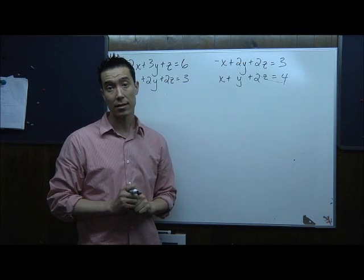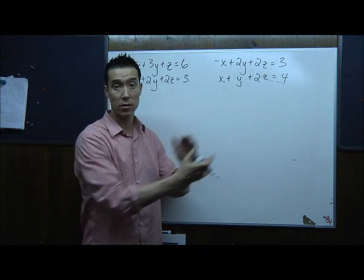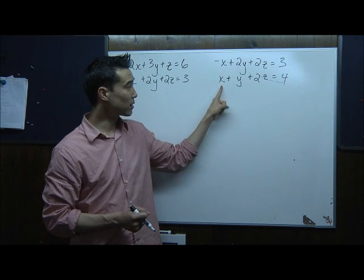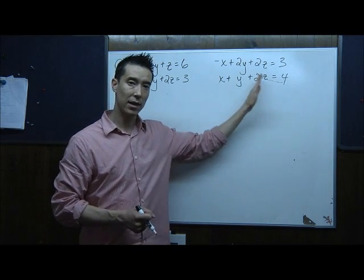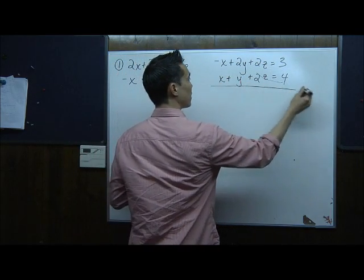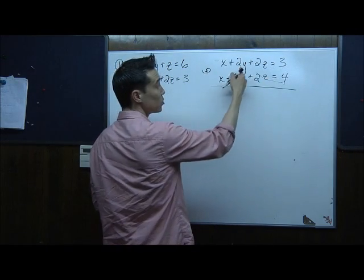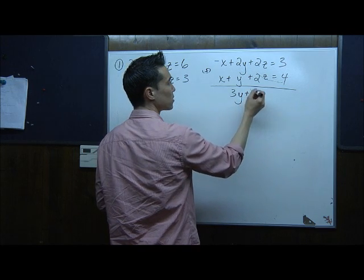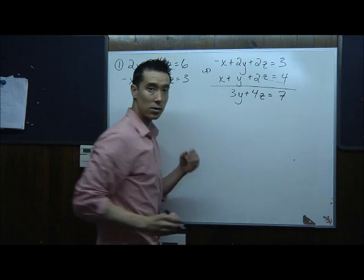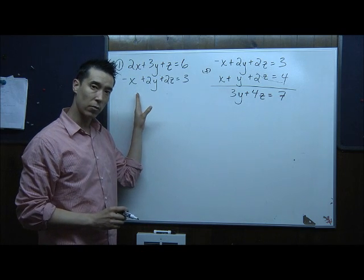After that first step, the second step is to eliminate the same variable in both pairs of equations. Looking here, negative x and x — it's going to be really easy to just add straight down and eliminate x. If I add straight down, I eliminate x: 2y plus y is 3y, plus 2z plus 2z is 4z, and 3 plus 4 is 7. I just eliminated x in these two, so I need to do the same thing over here.